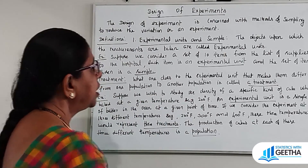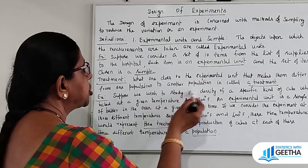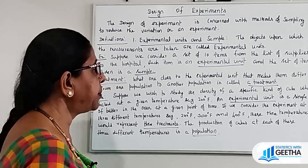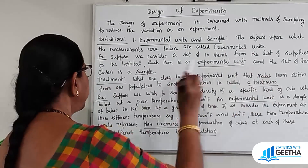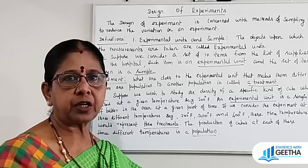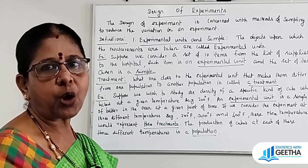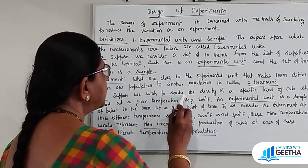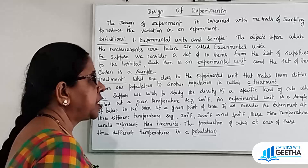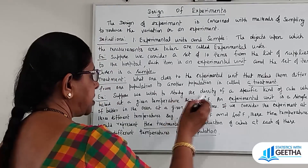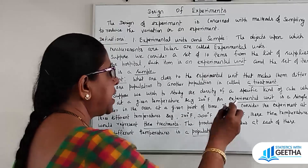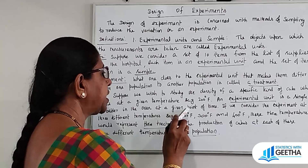Treatment. What one does to the experimental unit that makes them differ from one population to another population is called the treatment. Suppose we wish to study the density of a specific kind of cake when baked at a given temperature, say 200 degrees Fahrenheit. An experimental unit is a single mix of batter in the oven at a given point of time.